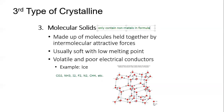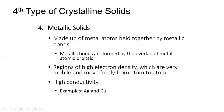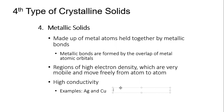The last type of solid is a metallic solid — just a metal by itself. Metallic solids have metallic bonds and very high electrical conductivity, which is why we use metals in wires to move electrons. If you see a metal on the periodic table by itself — like silver or copper — with no non-metal attached to it, it's a metallic solid.